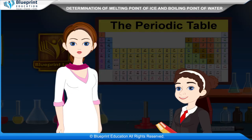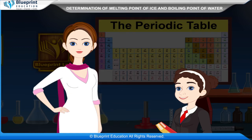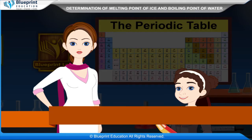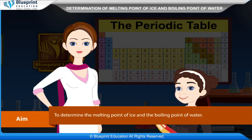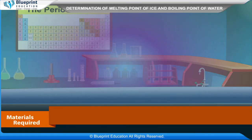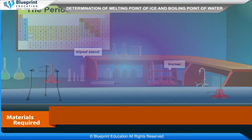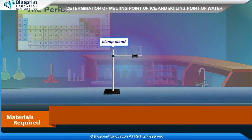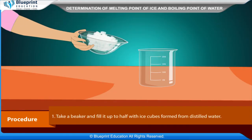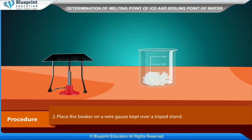Let's do an experiment to determine the melting point of ice and the boiling point of water. Our aim is to determine the melting point of ice and the boiling point of water. The materials required to determine the melting point of ice are: ice cubes, filter paper, beaker, wire gauze, tripod stand, burner, thermometer, and clamp stand.